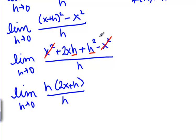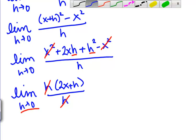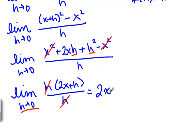Now we can cancel those h's and we're taking the limit as h goes to 0 of 2x plus h. So we're letting h become 0. So we're looking at 2x plus 0 which is 2x. So we found f prime of x is 2x.